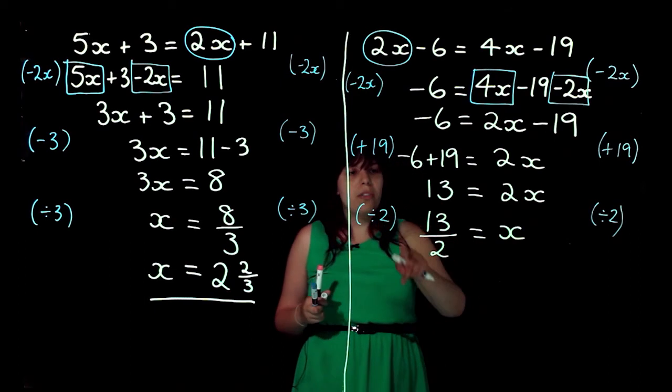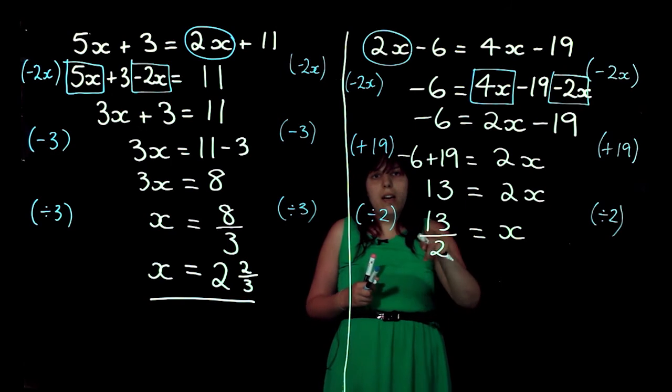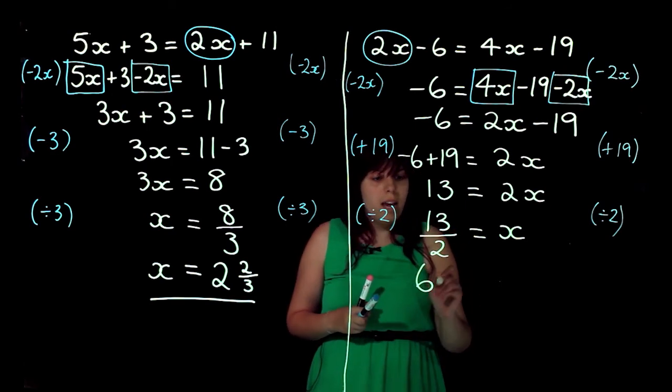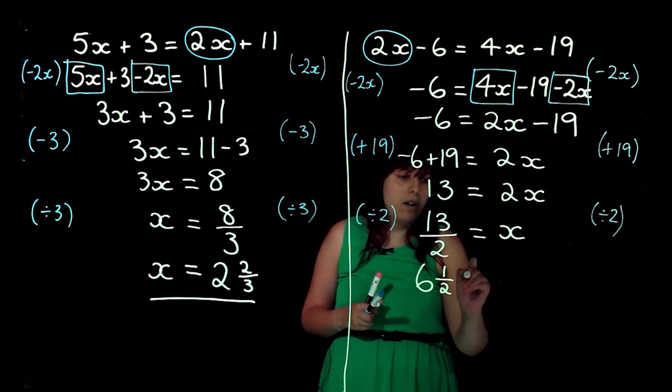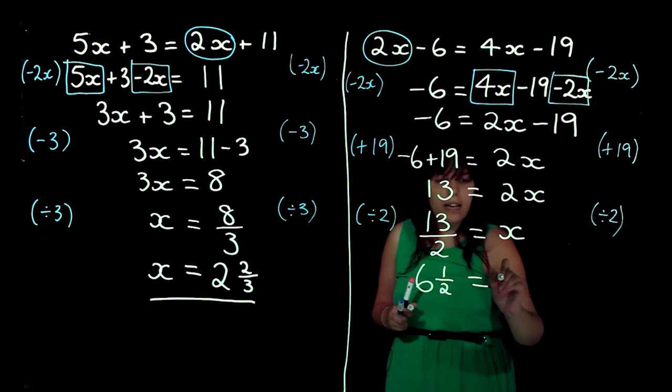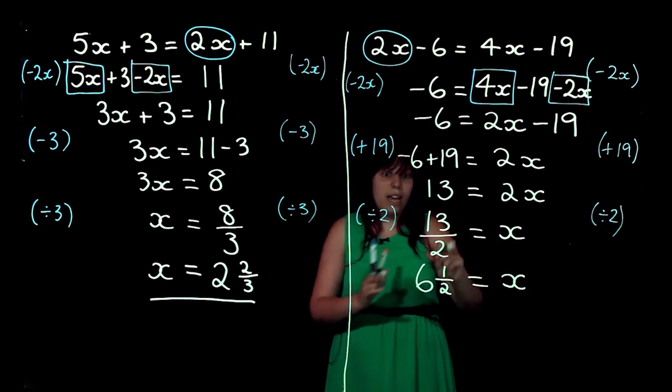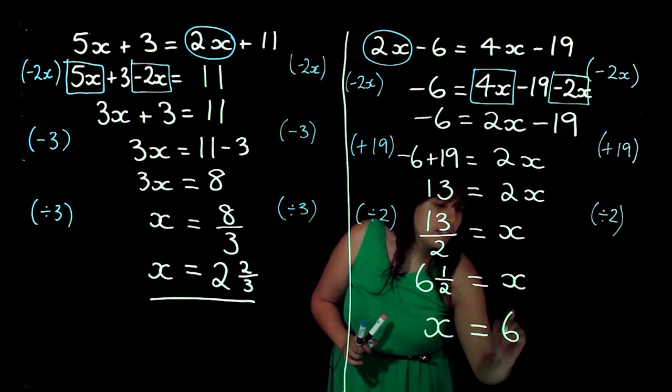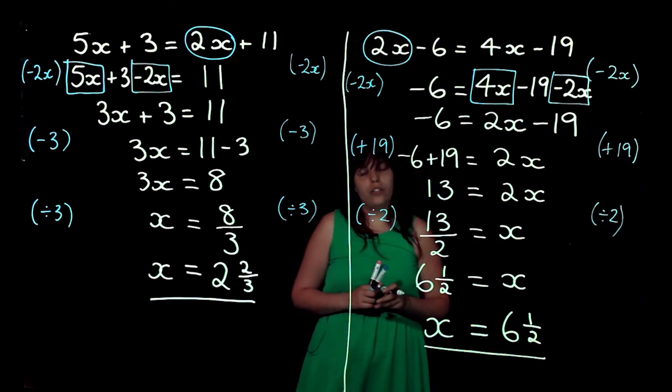And I can change my 13 over 2 to be a mixed number. So, how many 2s go into 13? Well, that's going to be 6. And I've got 1 left over. And that's 1 half. And that gives me x. So, it's always nice and tidy to have the x on the other side. So, we can just rewrite that as x equals 6 and a half. And that is our solution to that question.